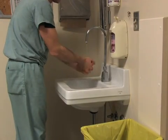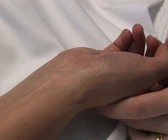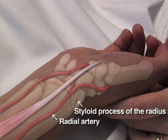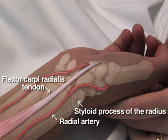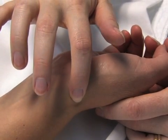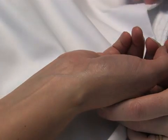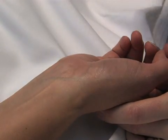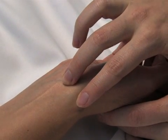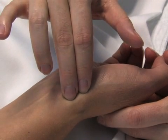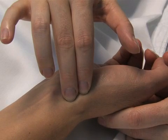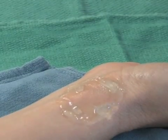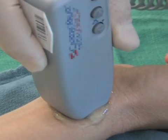Wash your hands according to good standards prior to examining the patient. Extend the patient's wrist to bring the radial artery close to a more superficial position. The radial artery is located between the styloid process of the radius and the flexor carpi radialis tendon. First, palpate the styloid process of the radius. Next, palpate the flexor carpi radialis tendon located medial to the styloid process. Now locate the artery between these two points. The artery may be difficult to palpate, for example, in the presence of overlying edema or vasospasm.